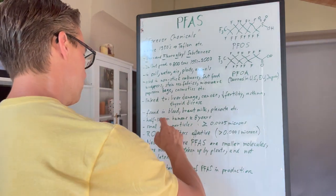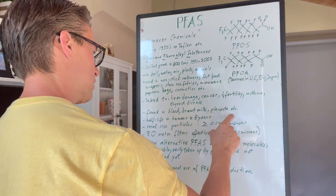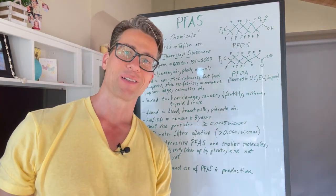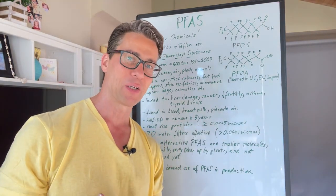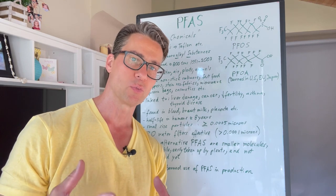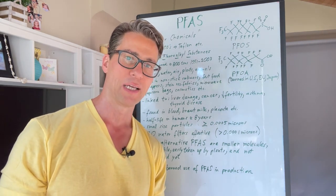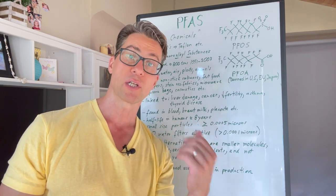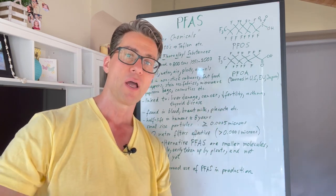So it's pretty scary stuff—found in blood, breast milk, placenta, and so on, not great. Half-life in humans is about eight years, so that means once it gets in our body, it takes eight years to get rid of about half of the amount that we absorbed. So the good news is we do get rid of it over time. While these molecules don't degrade—they're called forever chemicals—we over time can excrete them to some extent.